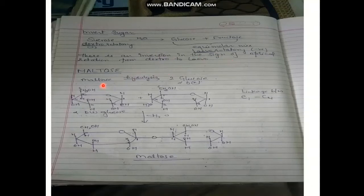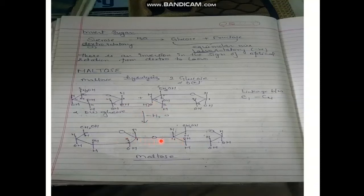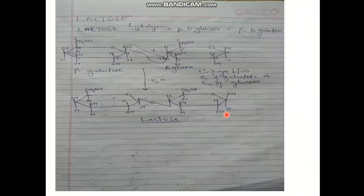Maltose also has the molecular formula C12H22O11, but it differs from sucrose because on hydrolysis it gives two molecules of glucose only. Here the linkage takes place from carbon 1 to carbon 4 of another glucose unit. Water is eliminated and both units are joined by the oxygen linkage — the glycosidic linkage. Importantly, the OH group must be at the lower position in glucose; if OH is upward at C4, it becomes galactose.